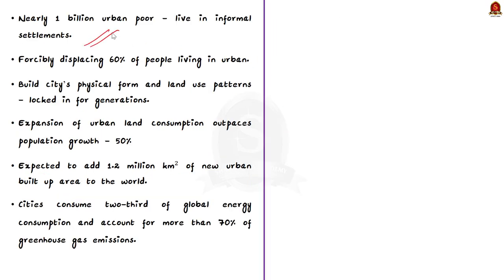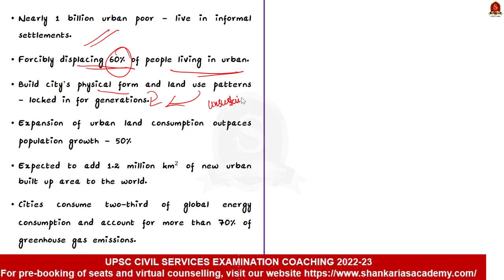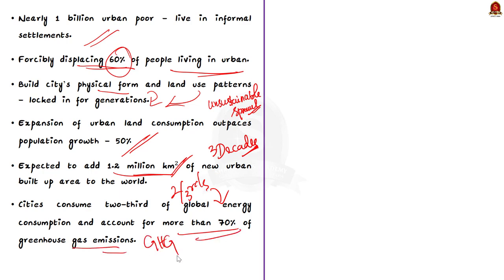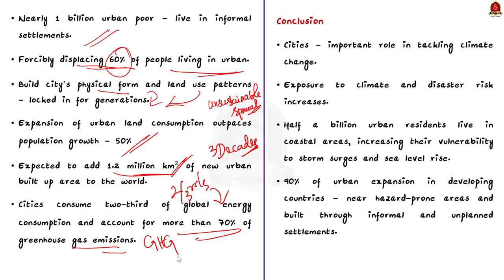Conflicts are on the rise, resulting in forcibly displacing 60% of people living in urban areas. Once a city is built, its physical form and land use patterns can be locked in for generations, leading to unsustainable sprawl. The expansion of urban land consumption outpaces population growth by as much as 50%, which is expected to add 1.2 million square kilometers of new urban built-up area to the world in three decades. Such sprawl puts pressure on land and natural resources. Cities consume two-thirds of global energy consumption and account for more than 70% of greenhouse gas emissions. Cities play an increasingly important role in tackling climate change because their exposure to climate and disaster risk increases as they grow.